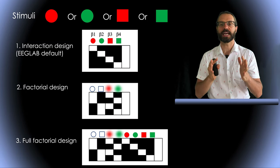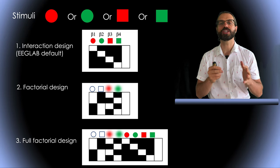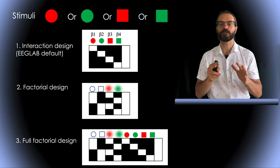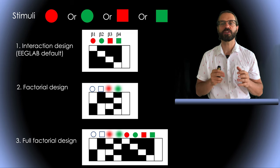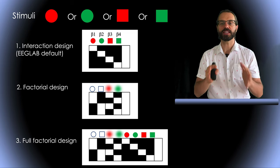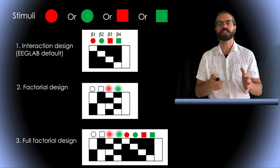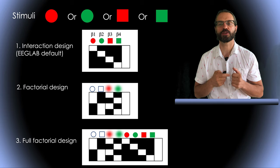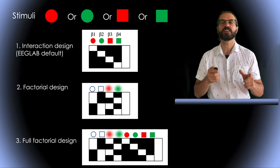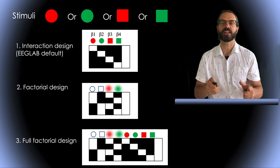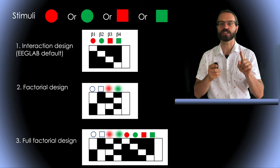I want to point out on this slide that even for a given experiment you can model your data in different ways. For example, say you have four types of visual stimuli, red disk, green disk, red square and green square. The default design matrix is to have one beta factor for each type of stimulus. This is called an interaction design.